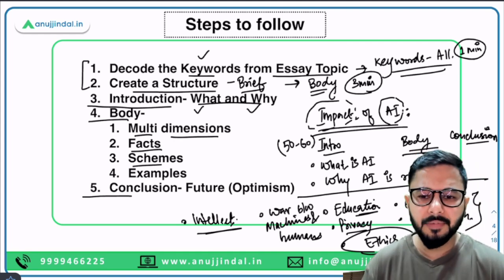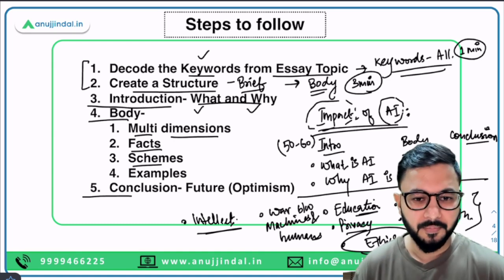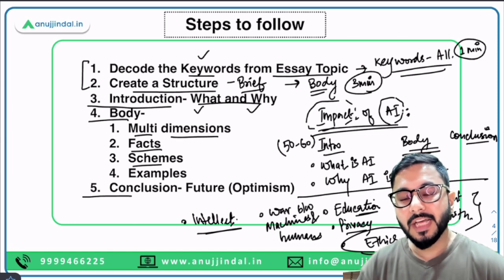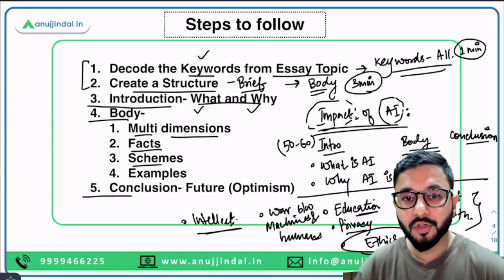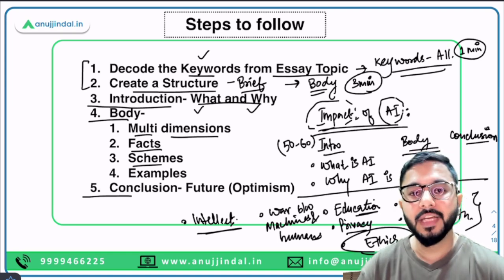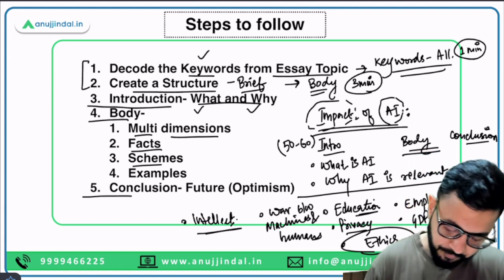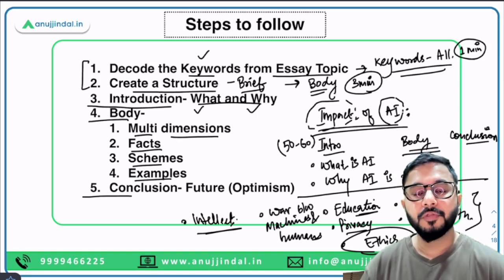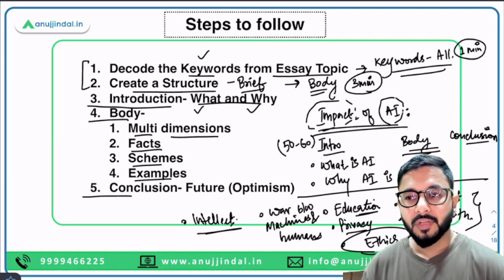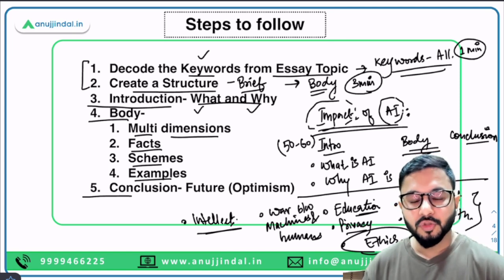The third thing to prepare in advance is schemes. For AI there may not be many, but for climate change you have Sustainable Development Goals, the National Action Plan on Climate Change, and many other programs you can easily include. Make sure you are covering schemes thoroughly for the examination because they form a very important part. Write those schemes in advance — it will be a booster for you to include them easily in the final essay.